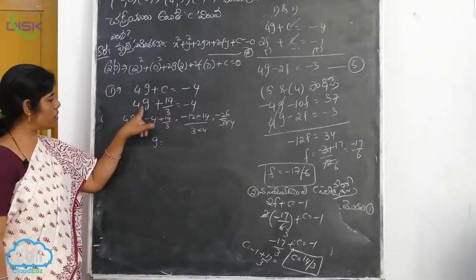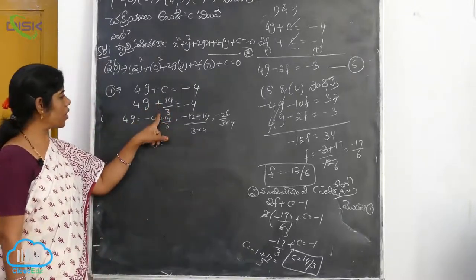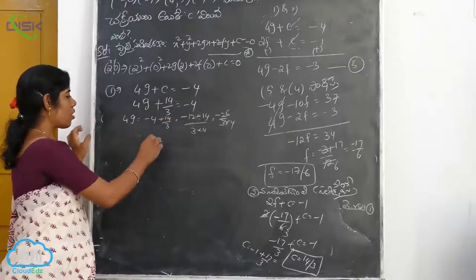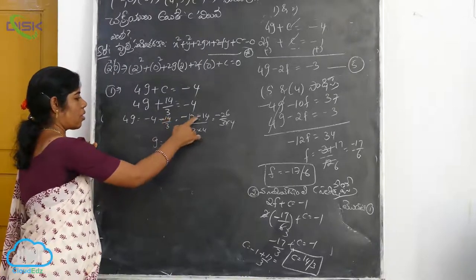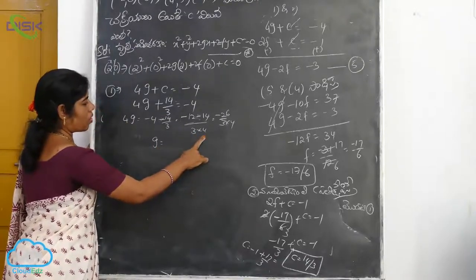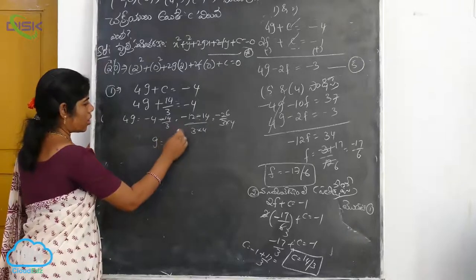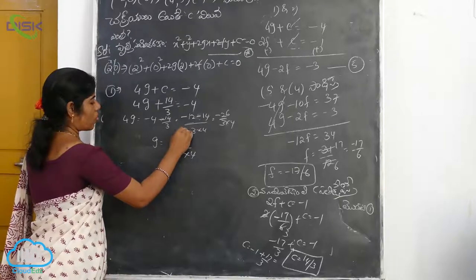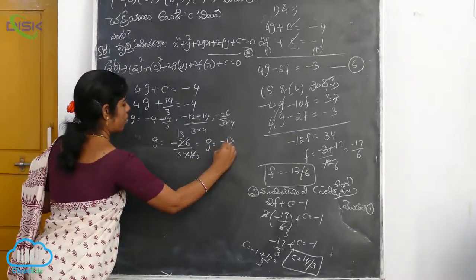4g plus c is equal to minus 4. So 4g is equal to minus 4 plus 14, that gives minus 12 minus 14 by 3 is equal to 4, so minus 26 by 3 is equal to 4. So g will be equal to minus 13 by 6.